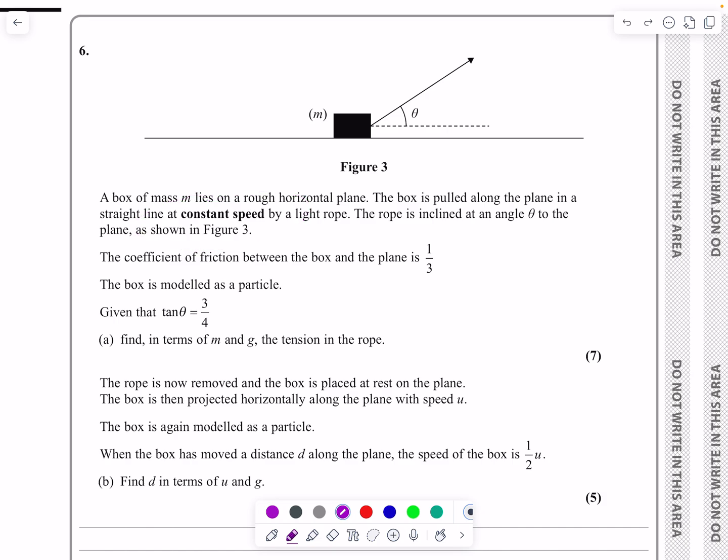Let's have a look at the information and draw our force diagram. We've got a box of mass M lying on a rough horizontal plane. The box is pulled in a straight line at constant speed by a light rope. The rope's inclined at theta. The coefficient of friction is one-third. The box is modeled as a particle.